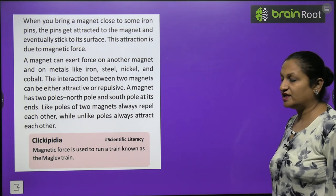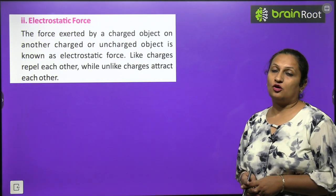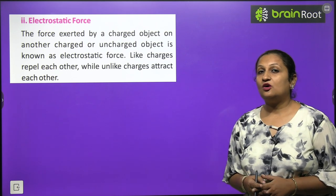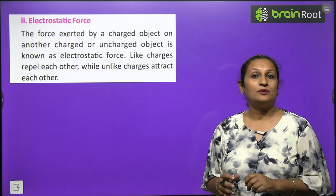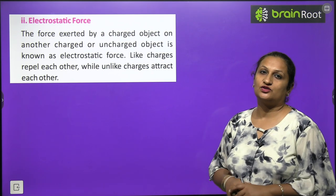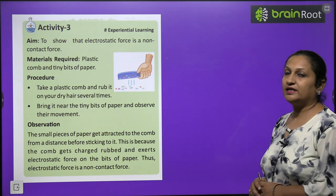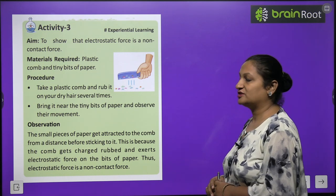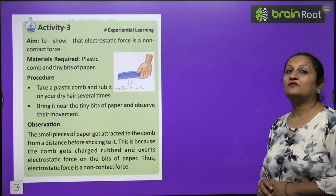Clickypedia: magnetic force is used to run a train known as a maglev train. Electrostatic force of attraction: the force exerted by a charged object on a charged or uncharged object is called electrostatic force of attraction. For example, rubbing a ruler on your hair and bringing it near small paper bits causes them to stick to the ruler. Activity: rub a plastic comb on dry hair and bring it near tiny bits of paper — the paper bits will stick to the comb due to electrostatic force.